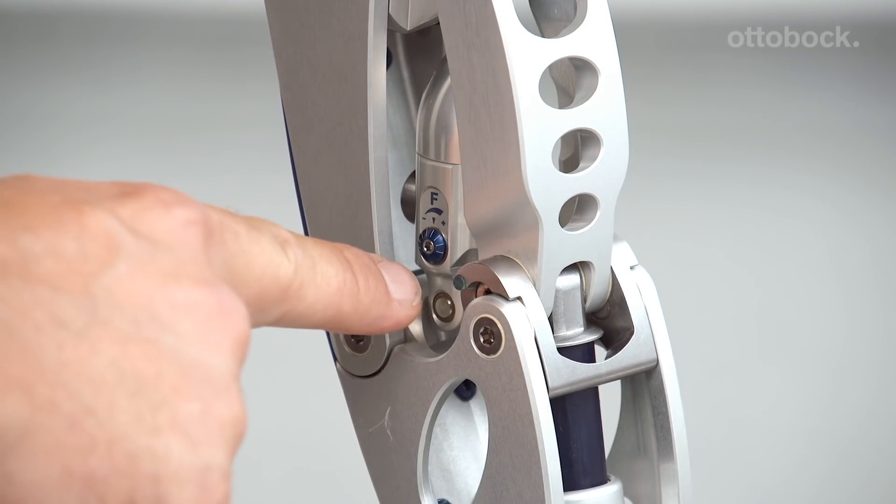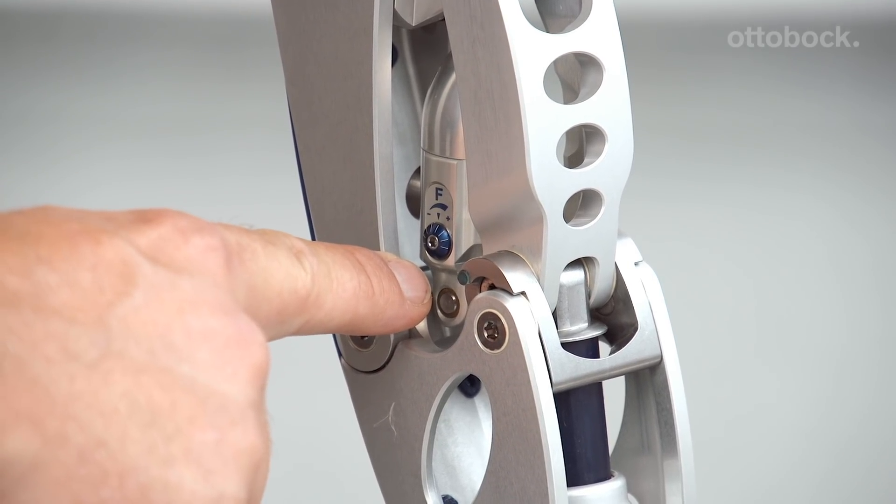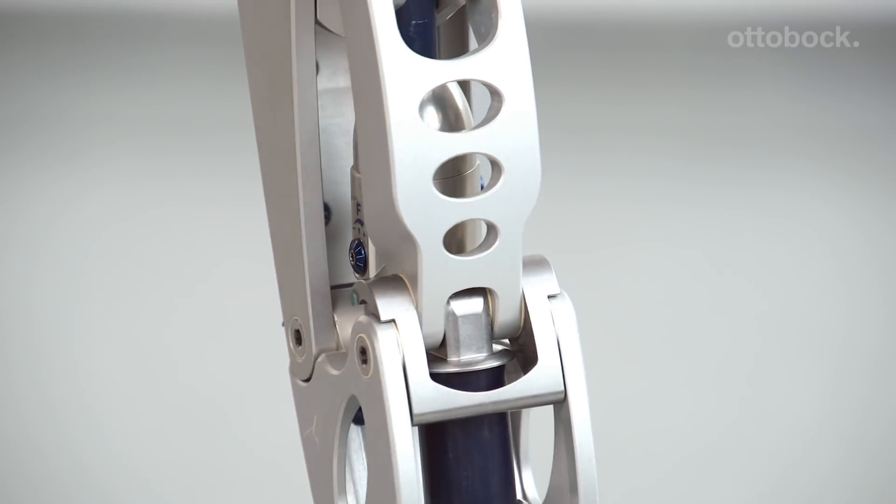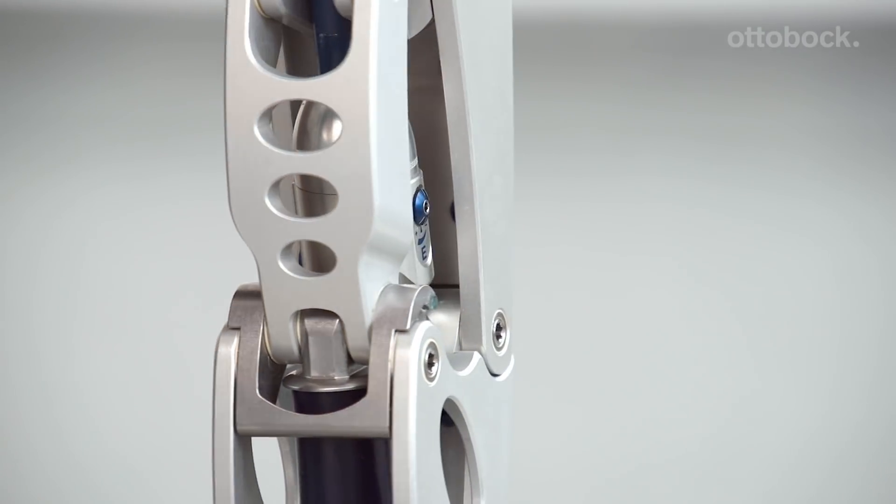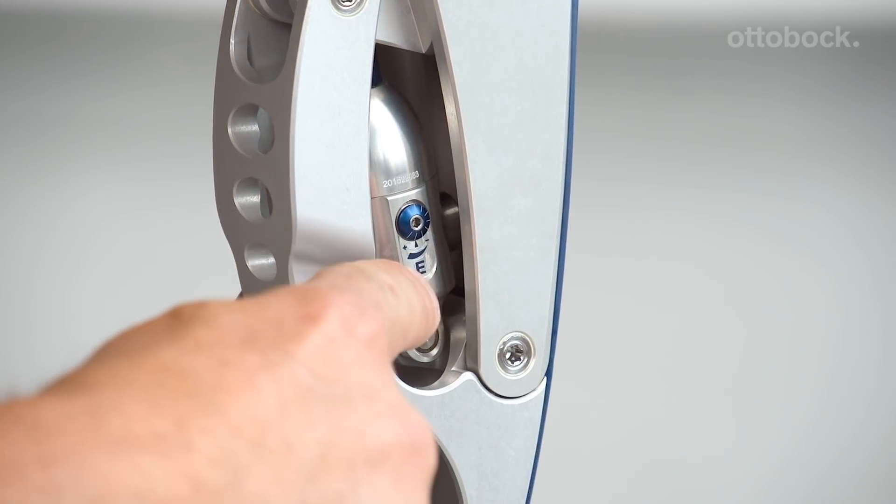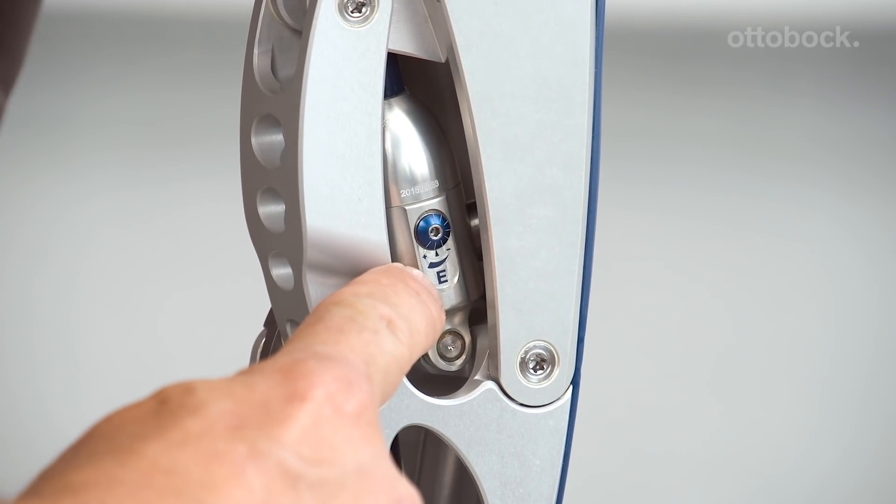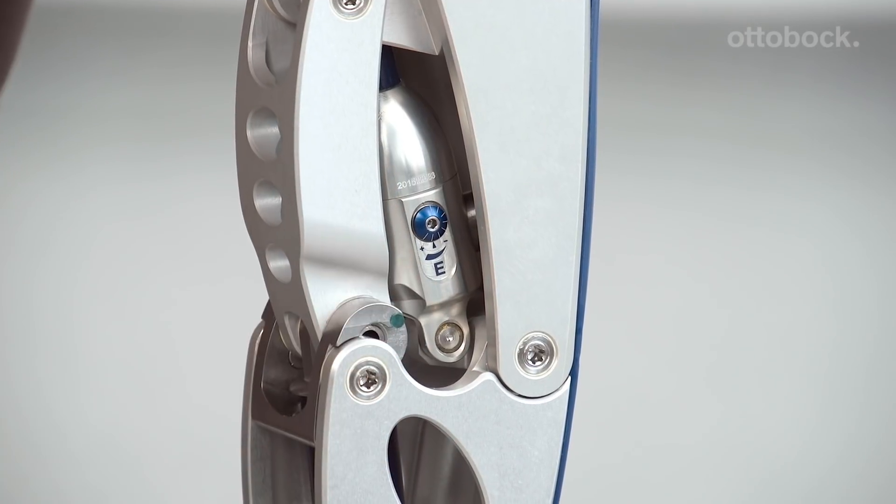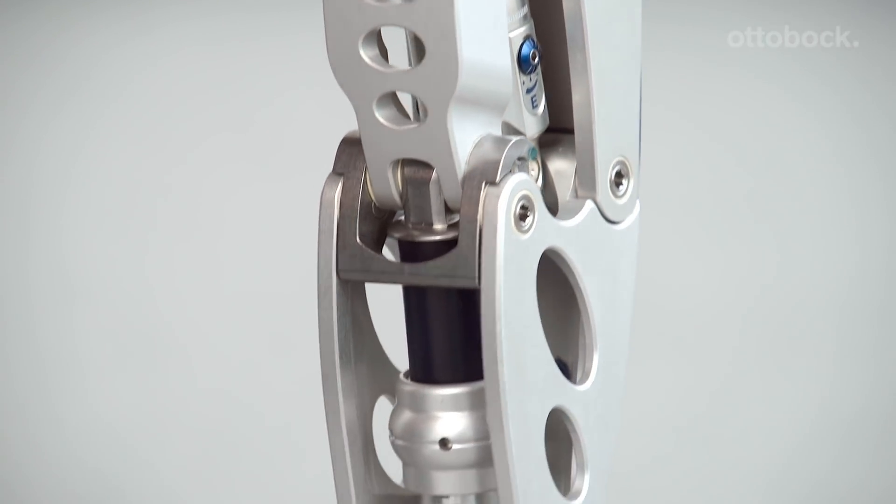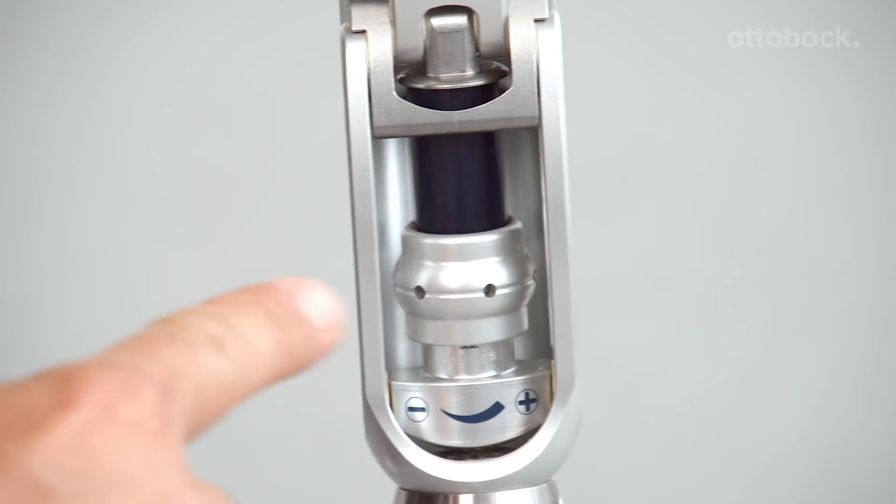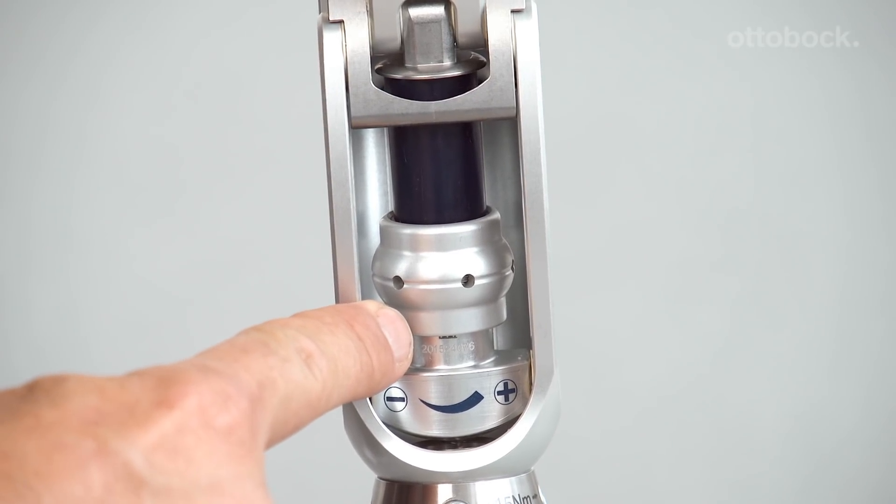The following adjustments can be made with the 3R60. Both flexion and extension can be separately adjusted to the user's requirements. The hydraulics controls the behavior of the knee joint during the swing phase. In conjunction with its polycentric joint kinematics, the EBS provides notable stance phase stability.